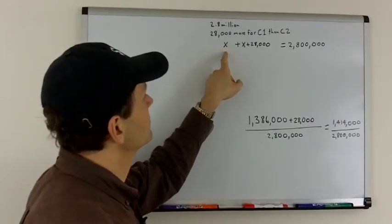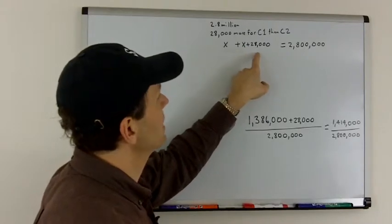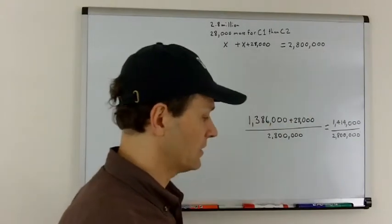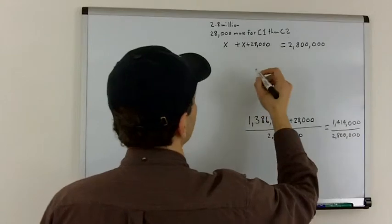Candidate 2 received X votes, Candidate 1 received X plus 28,000, and the total is equal to 2,800,000. Now, we just solve for X.